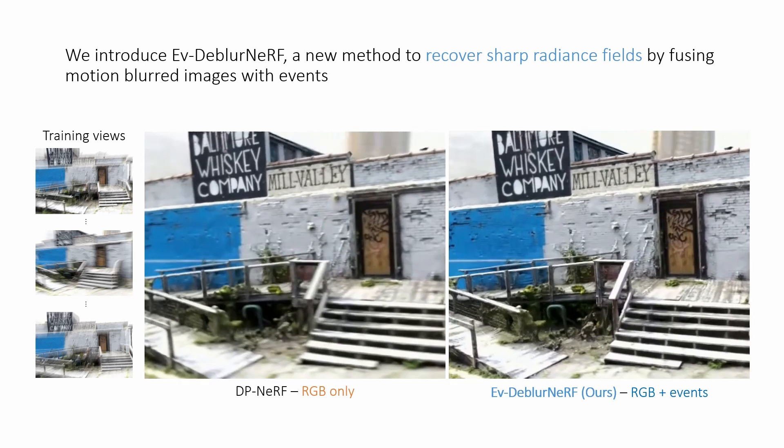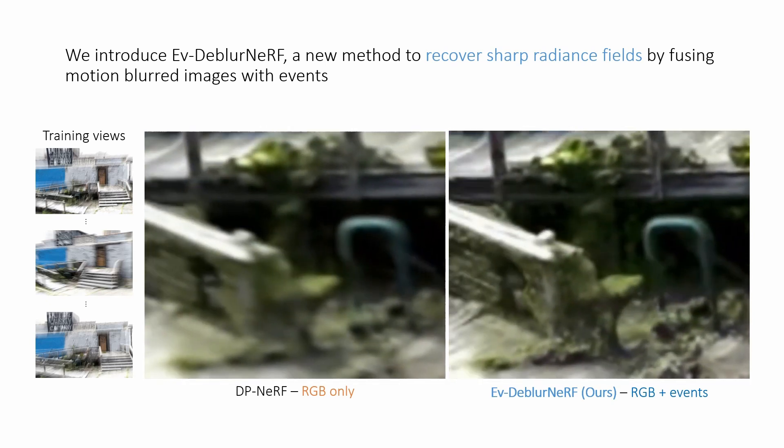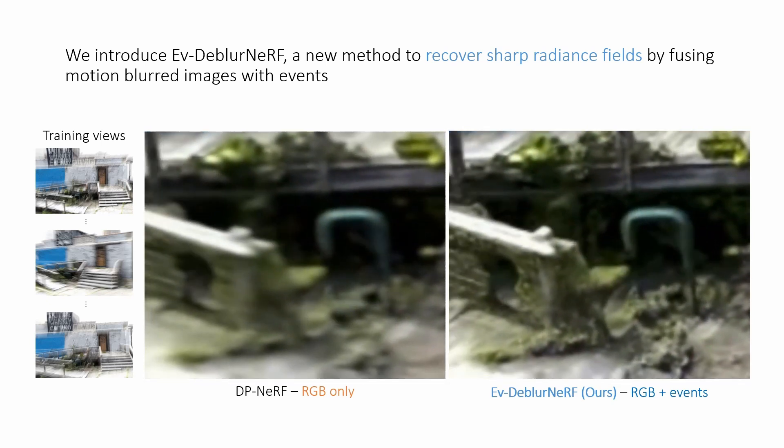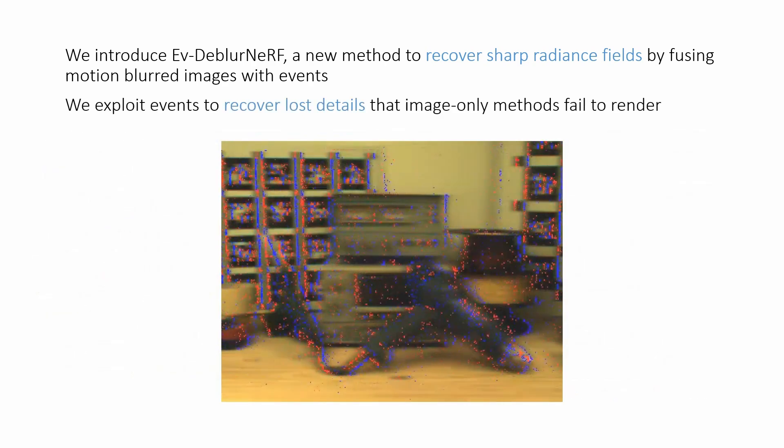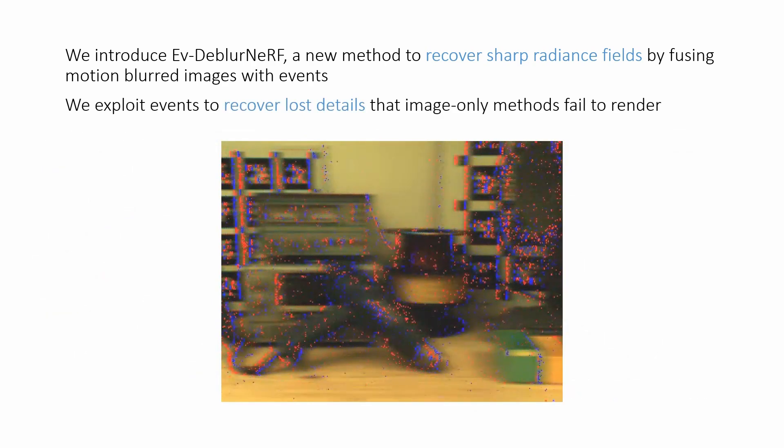Unlike methods only relying on images, we show that thanks to events, our method is capable of restoring fine and sharp details even if they are completely lost in the input motion-blurred training images.